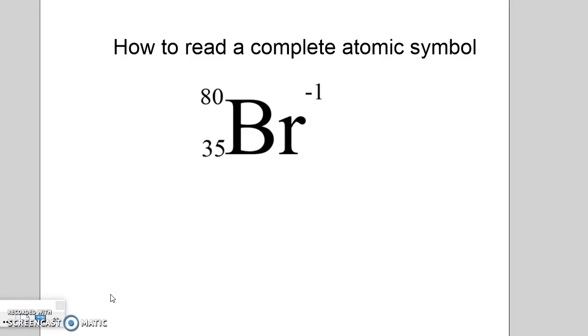Now we need to figure out what all these other numbers mean. You already should be familiar with all of these numbers. The top left number is the mass number. If you see a number on the top left, that's the mass number. If you recall, that's the number of protons plus neutrons. So this is not the number of neutrons. People get that wrong a lot. This atom does not have 80 neutrons. Its protons and neutrons add up to 80.